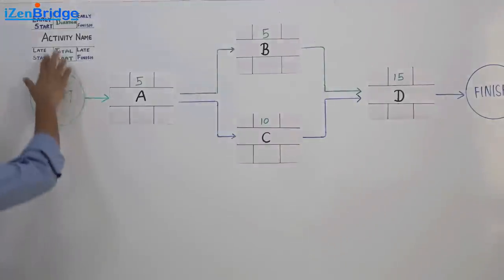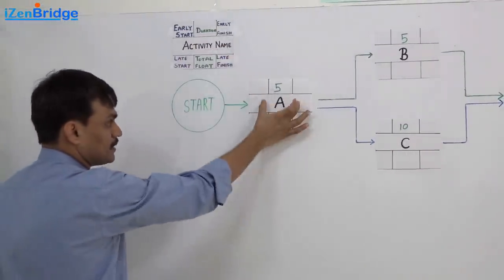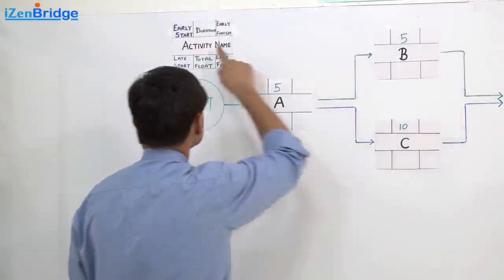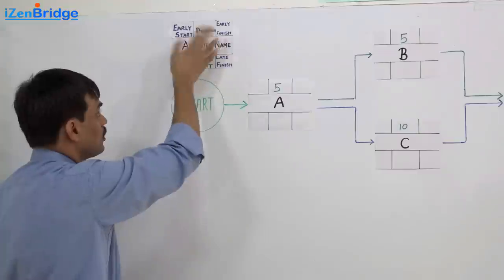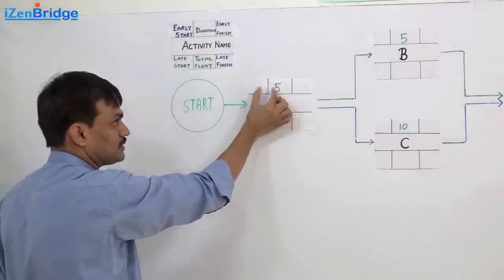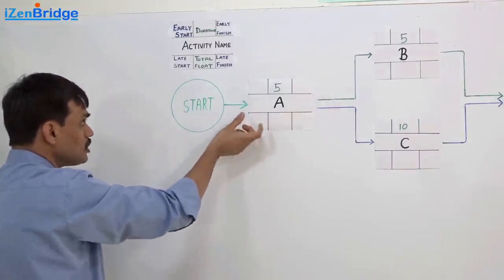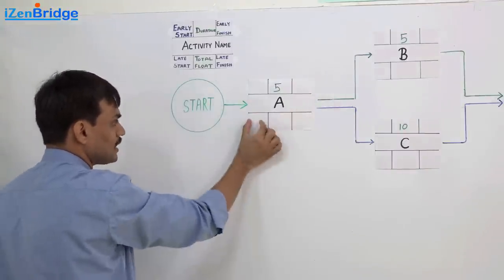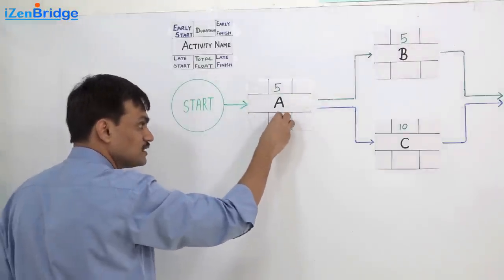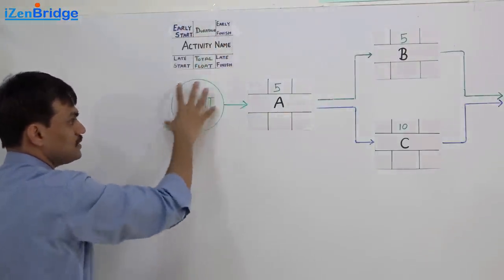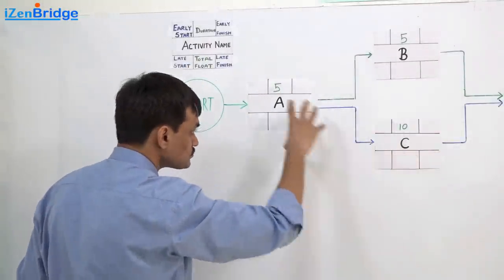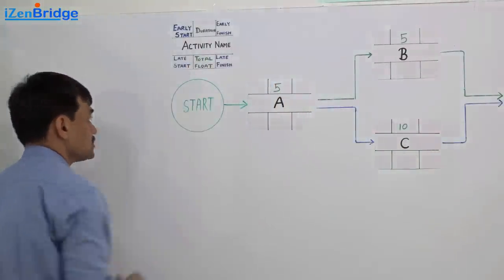We use a convention for these activity boxes. The activity name is written in the center, and the duration is shown as well. We calculate early start and early finish — early start goes here and early finish goes here. We also calculate late start, late finish, and total float, which are written in their respective positions in the box.